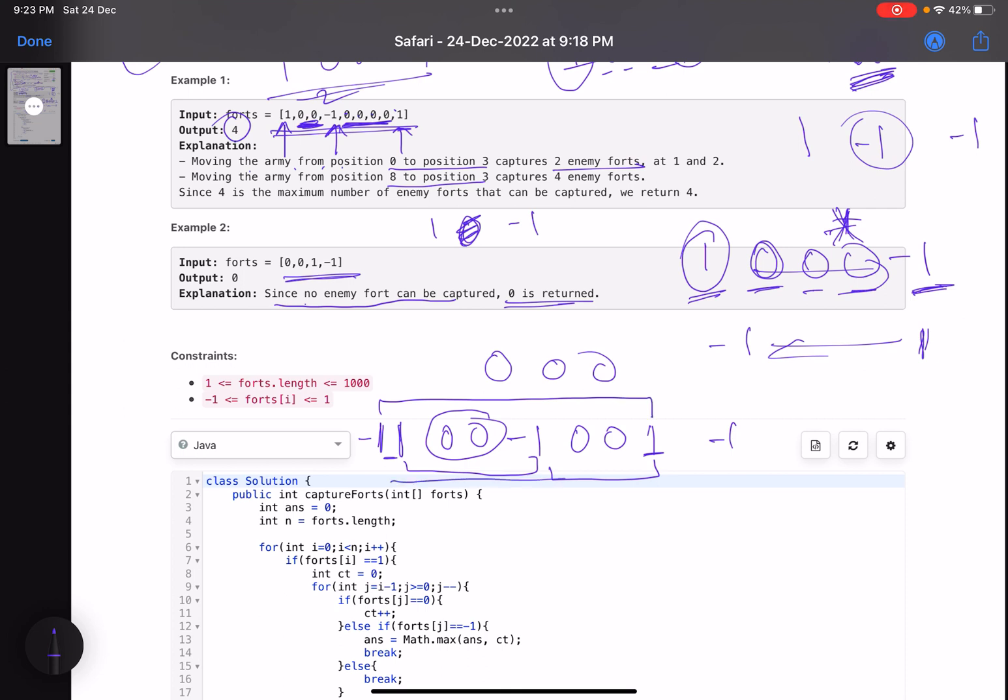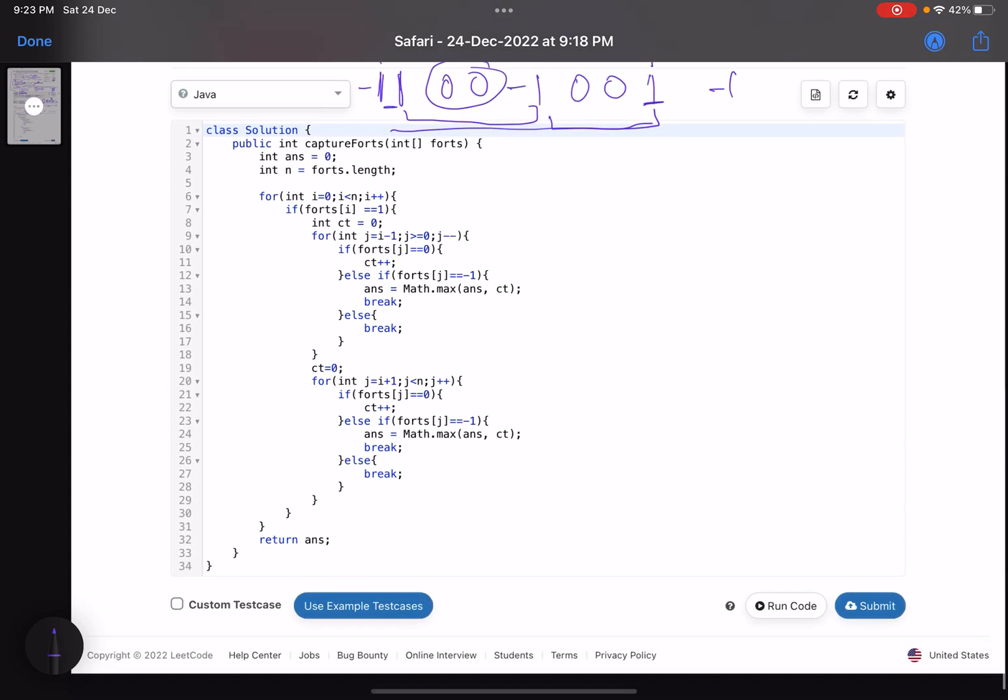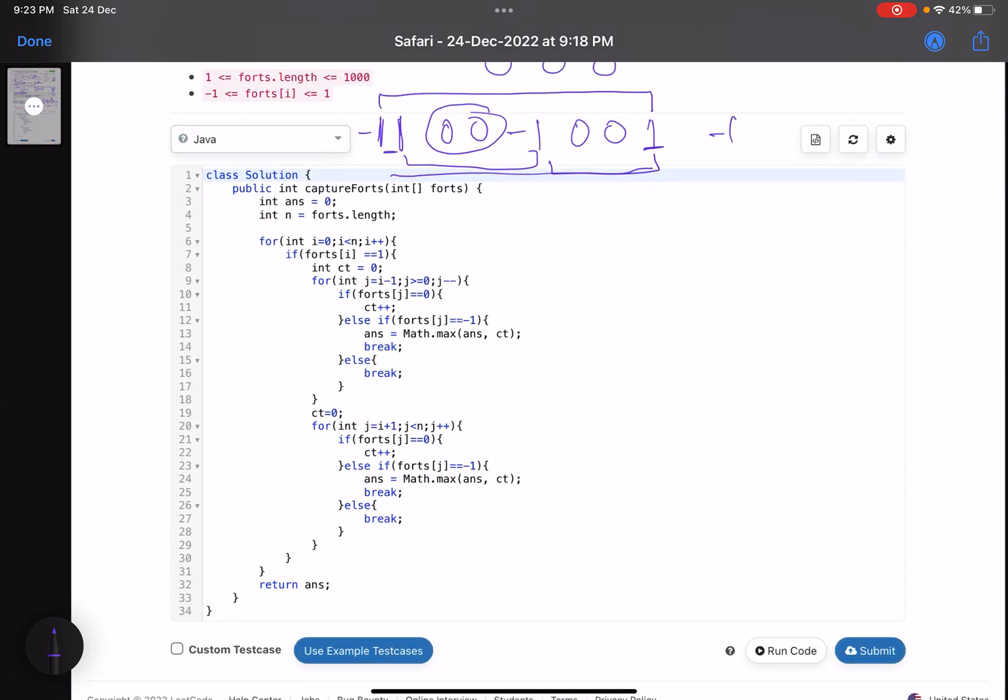I hope the problem statement is clear now. The logic is pretty simple - you apply a brute force here. You traverse your array. As soon as you find a 1, suppose you find a 1 here, consider that you are trying to move this fort. What are the possibilities of moving this fort? Either you can move in this direction or in this direction.